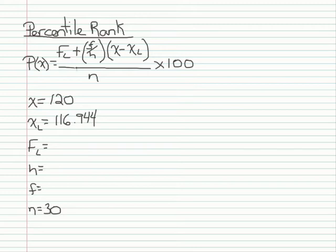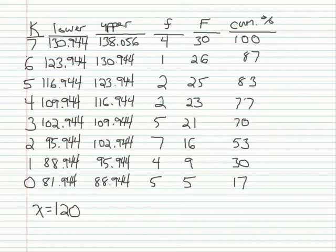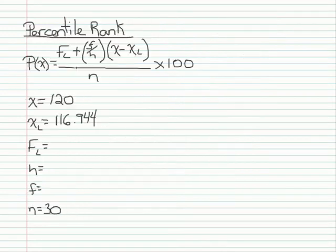Next I need to find f sub l, which is the frequency of scores below x sub l. So I go back to the interval that contains my point, and I need the frequency of scores below that interval, and that's going to be 23. So f sub l is going to be 23. h is the interval width, and we know that's going to be 7 based on previous examples.